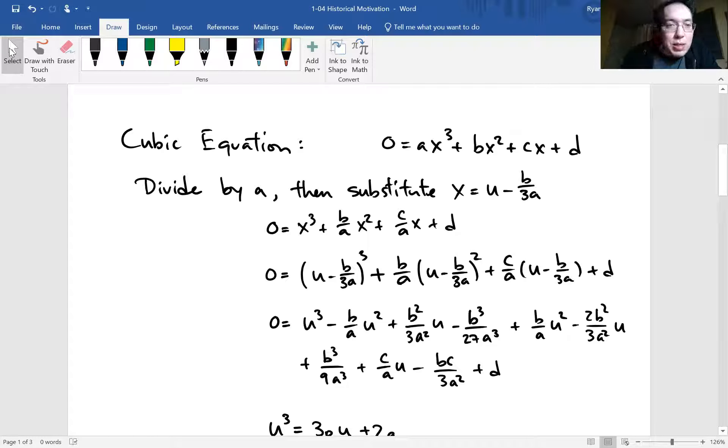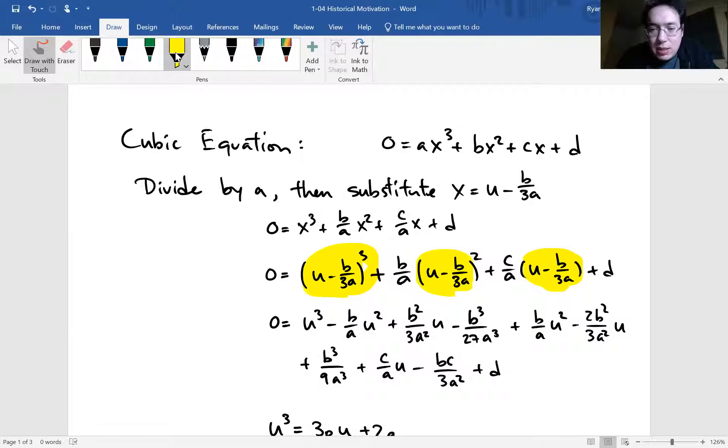So if you substitute in u minus b over 3a in place of x, this is what we get. And then it gets a little bit messy with the algebra. So you can cube and square and expand everything on this line. Don't worry too much about individual term. What I want you to pay attention is the square term. There's only two terms that has u² in it. And the substitution was made so that these two coefficients cancel out. So the u² terms disappear with the substitution.